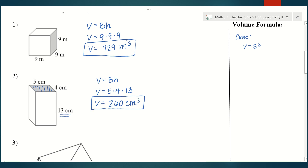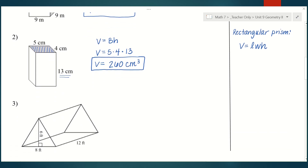This formula you're probably familiar with. To find the volume of a rectangular prism, instead of big B times H, a lot of times we just do length times width times height. That's the one you'll see me use.